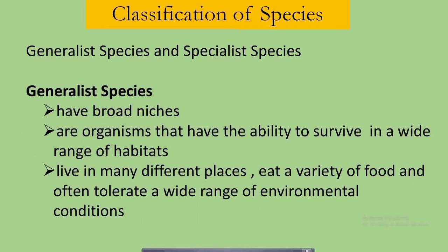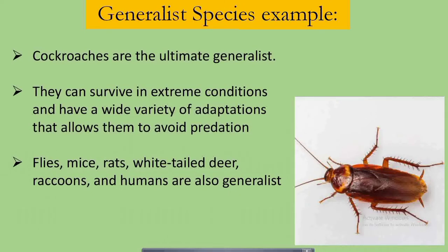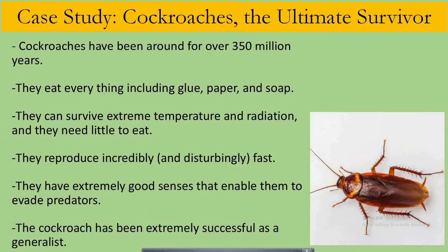There are two classifications of species: it can either be generalist or specialist. Generalist species have broad niches and have the ability to survive in a wide range of habitats. They live in many different places, eat a variety of food, and often tolerate a wide range of environmental conditions. One example is cockroaches — the ultimate generalists. They can survive in extreme conditions and have a wide variety of adaptations that allow them to avoid predation. Flies, mice, rats, white-tailed deer, raccoons, and we humans are also generalists. Here's a case study titled The Cockroach: The Ultimate Survivor.